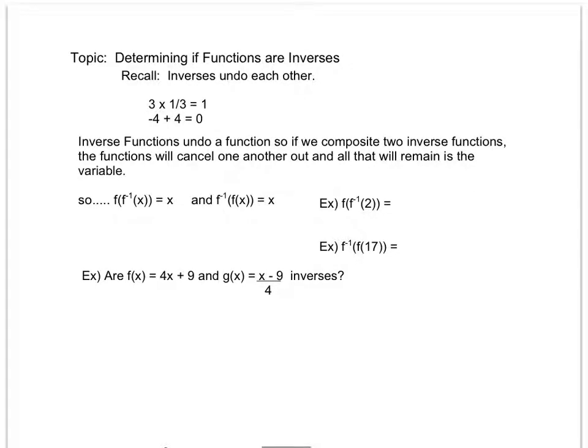You've already worked with inverse operations, however we haven't worked with inverse functions yet. If we think about what inverse operations are, inverse operations are operations that undo each other. For example, multiplying gets rid of one third, adding gets rid of subtraction. We can also think of it in terms of multiplicative and additive inverses, where 3 times one third cancel each other out and become 1, and negative 4 and 4 cancel each other out and become 0.